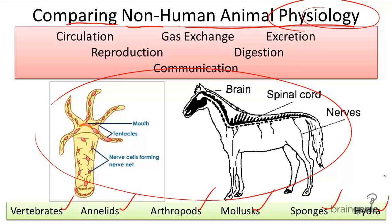We will be specifically covering the following topics: circulation, gas exchange, excretion, reproduction — such as asexual versus sexual reproduction — digestion and nutrient absorption, and communication or nervous systems.